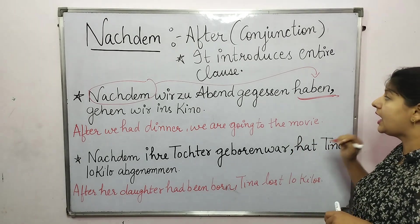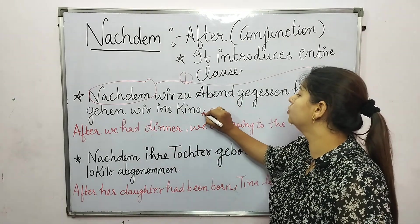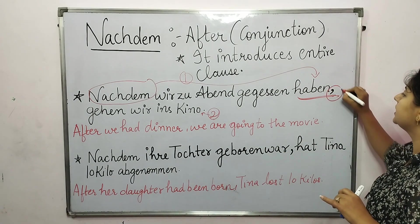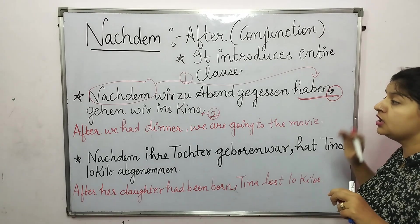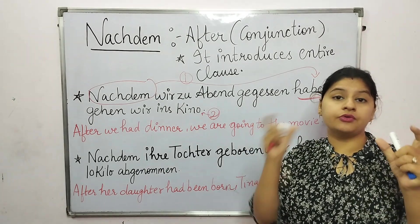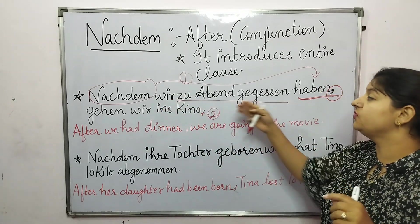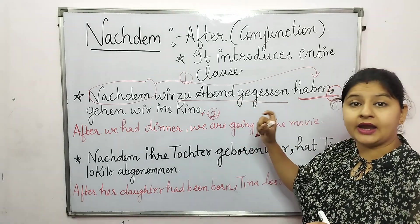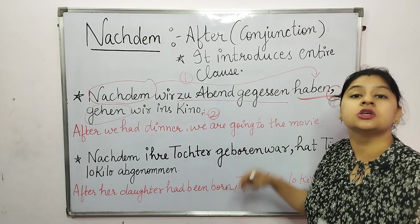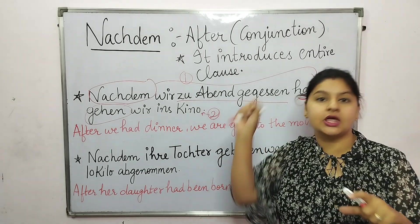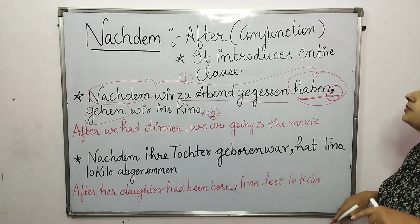Both sentences — sentence one (the Nebensatz with nachdem, verb at the end) and sentence two (the Hauptsatz) — are connected by a comma. After the comma, the verb comes first. We must remember to connect both sentences with a comma, and after the comma place the verb directly.